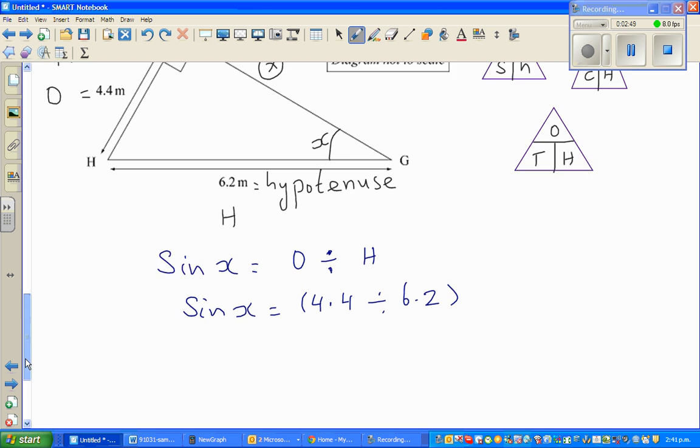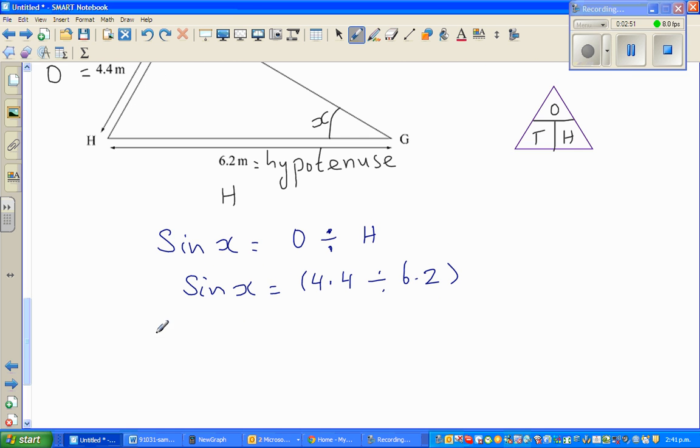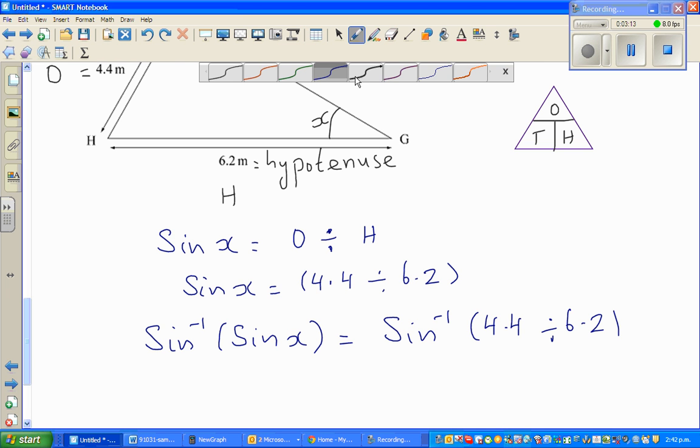Now to find X, you have to find the SIN inverse of this side. I'll do this step because many students don't know why they have to take SIN inverse. So I'm taking SIN inverse of this side. As an equation, whatever you do on one side, you have to do on the other side. So SIN inverse of 4.4 divided by 6.2. Now, SIN inverse and SIN are opposite of each other. That means they cancel each other out.